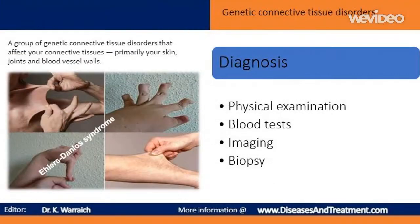Physical examination: extremely loose joints, fragile or stretchy skin, and a family history of Ehlers-Danlos syndrome are often enough to make a diagnosis. Blood tests and genetic tests on a sample of your blood can confirm the diagnosis in some cases and help rule out other problems.